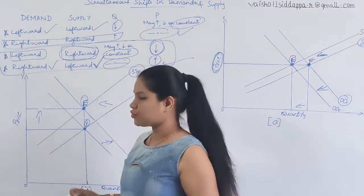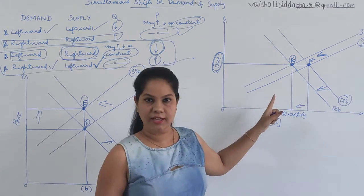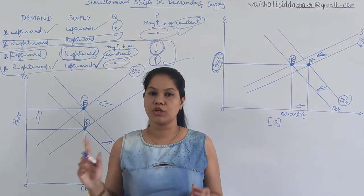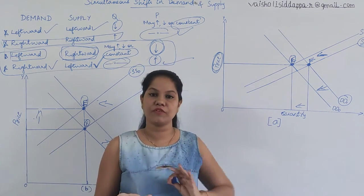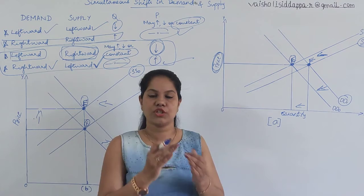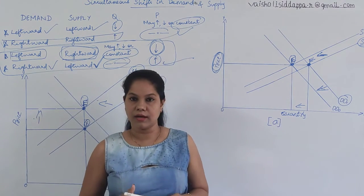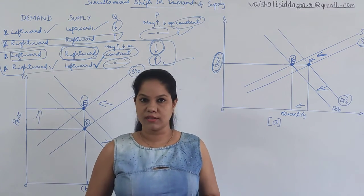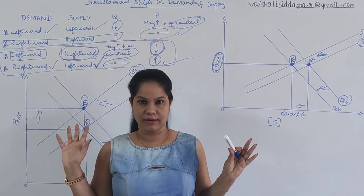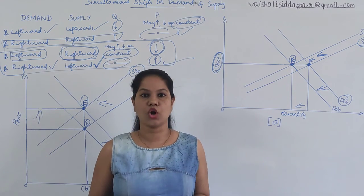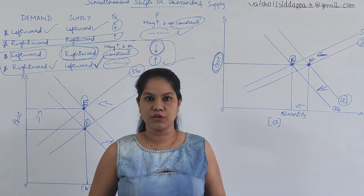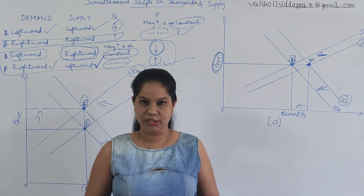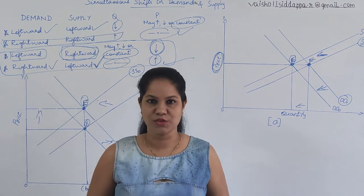So all four situations are covered: two in Panel A and two in Panel B. In your textbook they may give only one direction, but if you change the direction you get the other example as well. Thank you so much — I hope you understood this topic. If you are liking my videos and able to understand my classes, please do subscribe. Thank you so much.